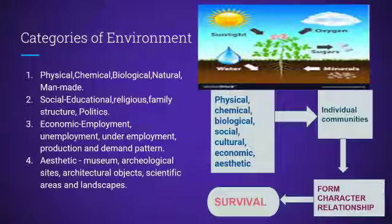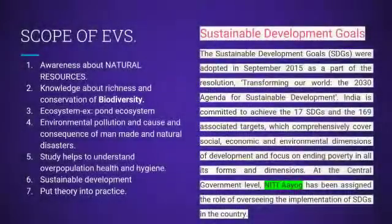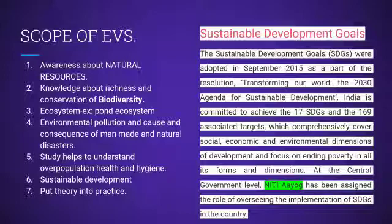Aesthetic categories include museums, archaeological sites, architectural objects, scientific areas, and landscapes. The scope of environmental studies covers awareness about natural resources, knowledge about the richness and conservation of biodiversity, ecosystems (e.g., pond ecosystem), environmental pollution, causes and consequences of man-made and natural disasters, overpopulation, health and hygiene, and sustainable development.